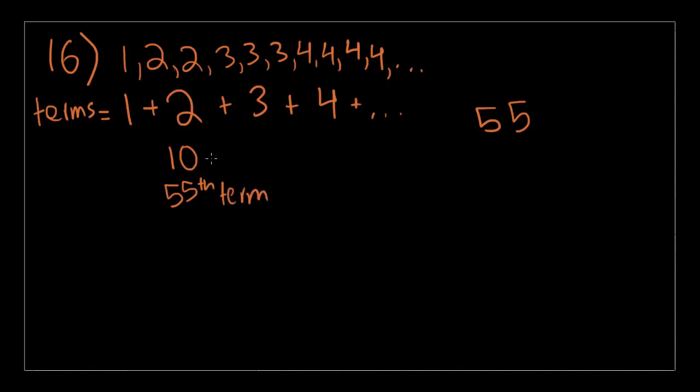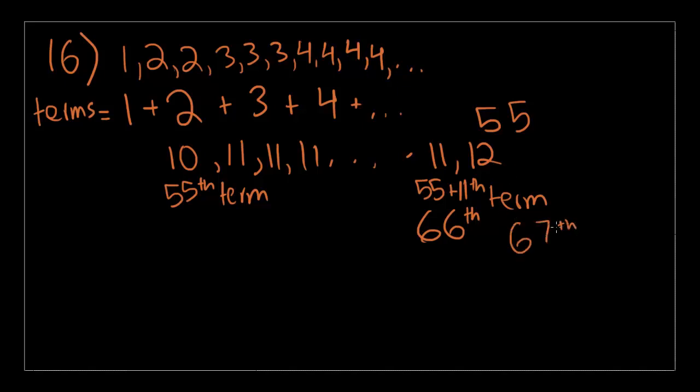If you remember that, then you know that the last 10 that will be written is the 55th term. And then comes 11, which comes 11 times. If 11 comes 11 times, we know the last 11 before the 12, this will be the 55th plus 11th term. 55 plus 11 is 66, so it's the 66th term. And it asks, if the integer 12 first appears in the sequence as the nth term. So the first appearance of 12 is the 66th plus 1th term, so it's the 67th term, and that is the correct answer.